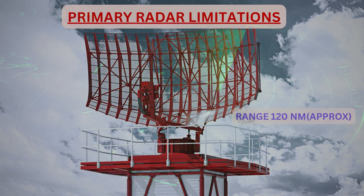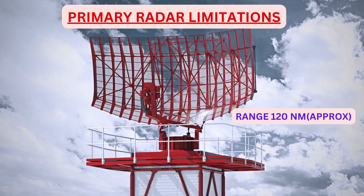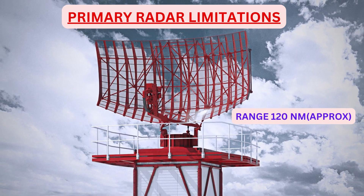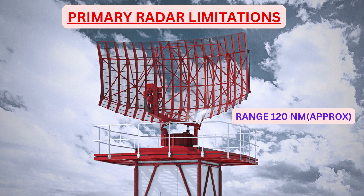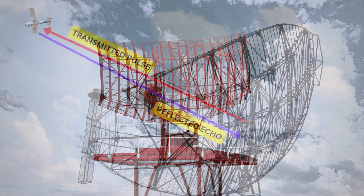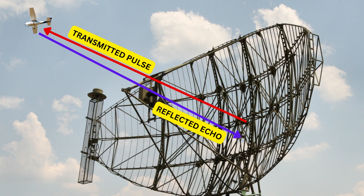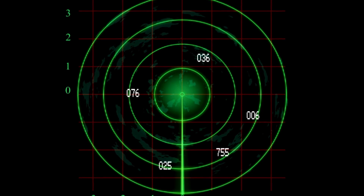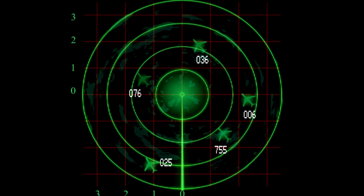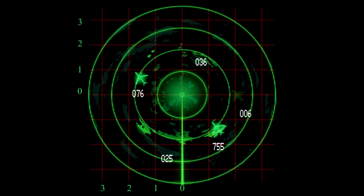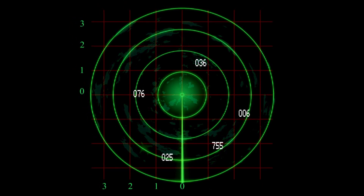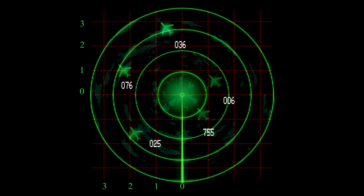But there are three major limitations with primary radar. First, the range is limited to 120 nautical miles, and to double the range, the power of transmission has to be increased 16 times since the signal has to travel in both directions. Second, there was no means to identify that a particular echo pulse belongs to which aeroplane in the sky. And third, there was no height information of the target from the radar echo.